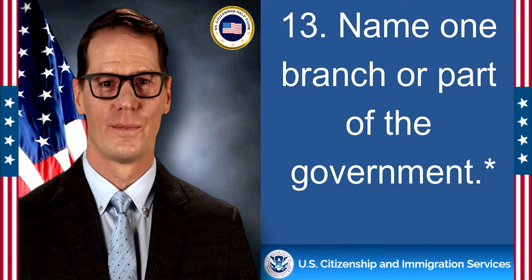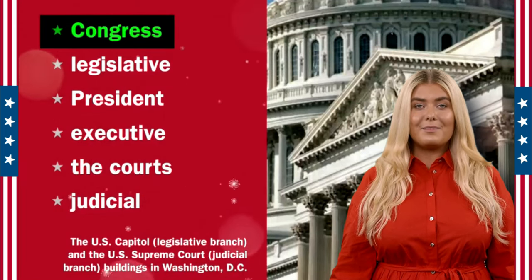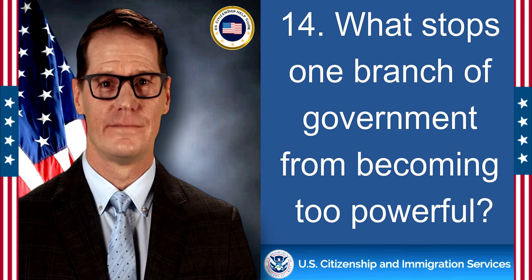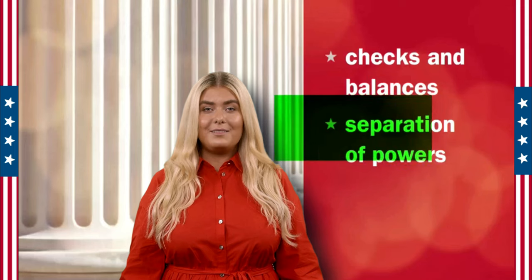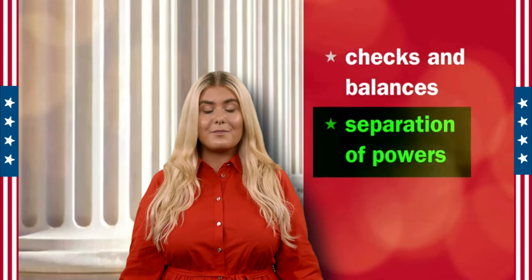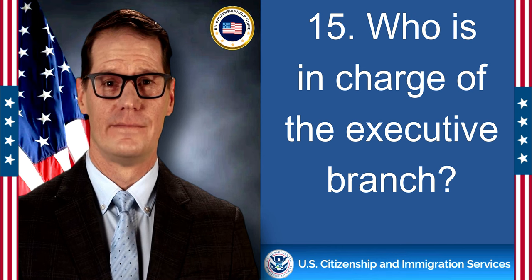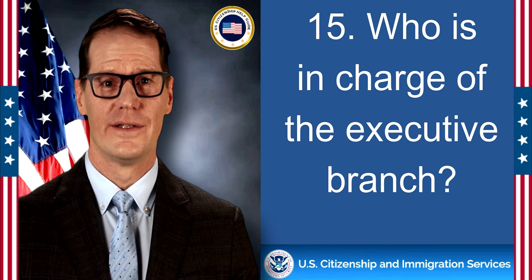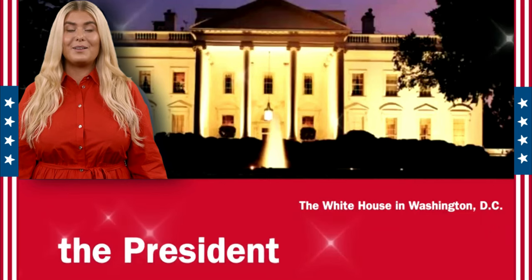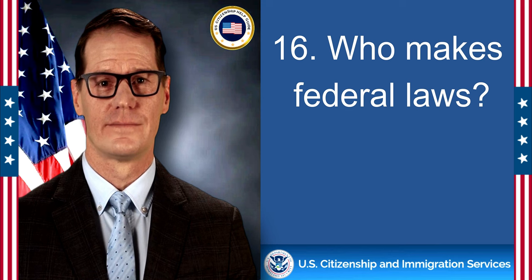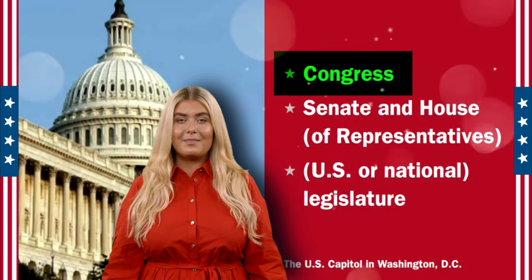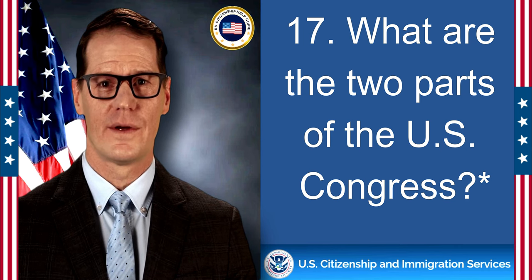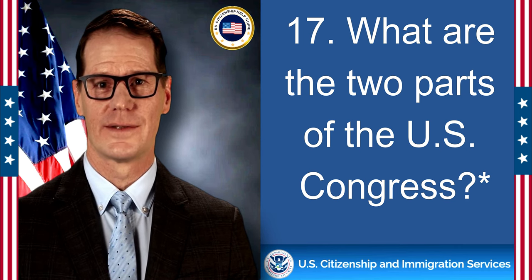Name one branch or part of the government. Congress. What stops one branch of government from becoming too powerful? Separation of powers. Who is in charge of the executive branch? The President. Who makes federal laws? Congress. What are the two parts of the U.S. Congress?